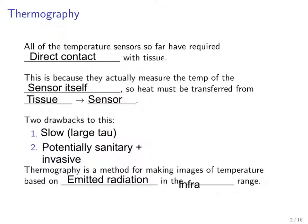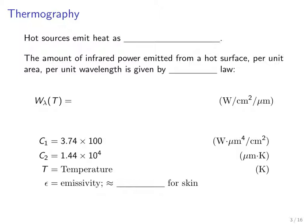A hot object will emit infrared radiation, and instead of putting something into contact with that tissue, we instead rely on the fact that it's emitting photons that we can have a detector sitting off from the tissue to detect. So hot sources emit heat as infrared radiation.